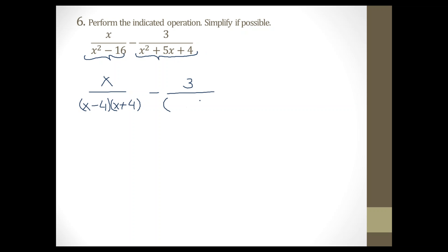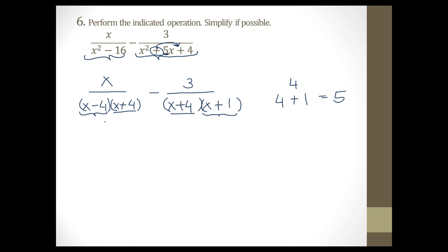For the second fraction's denominator — a trinomial with coefficient 1 — using the Colombian method: square root the first term to get x and x, bring down the first sign (plus), multiply signs to get plus, find factors of 4 with same signs that add to give the middle number 5. Factors of 4 that add to 5: 4 times 1. Larger first: (x+4)(x+1). Comparing both denominators, both already have x plus 4, but one has x minus 4 and the other has x plus 1, which are different.